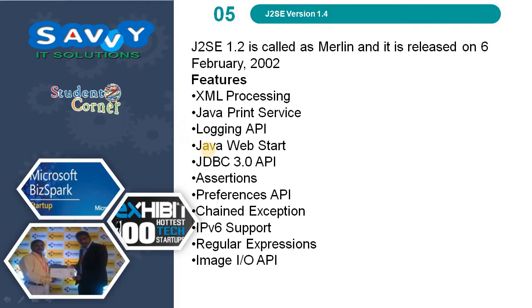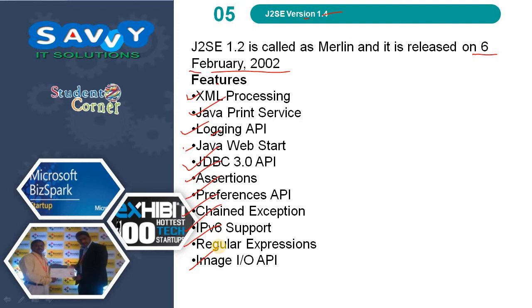Java 1.4 is released on 6th February 2002. Features include XML Processing, Java Print Service, Logging API, Java Web Start, JDBC 3.0 API, Assertions, References API, Chained Exception, IPv6 Support (Internet Protocol version 6), Regular Expressions, and Image Input Output API.